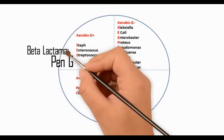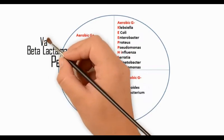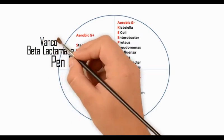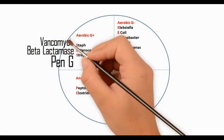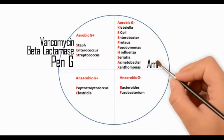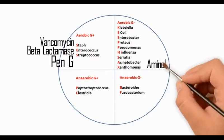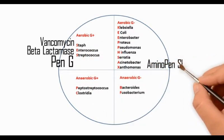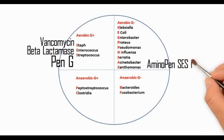Penicillin G and beta-lactamase-resistant antibiotics such as nafcillin, cloxacillin, oxacillin, and vancomycin work against Staph, Enterococcus, and Streptococcus.